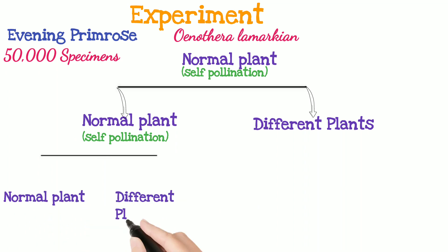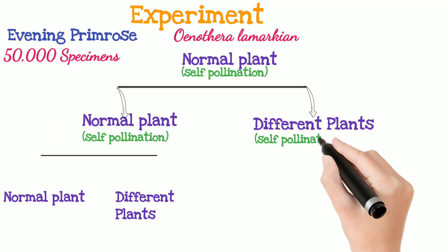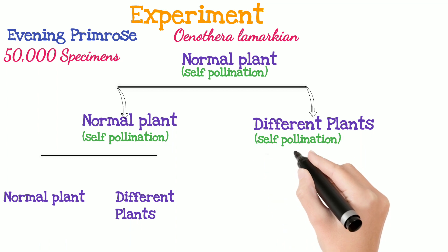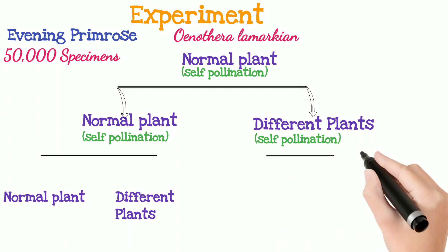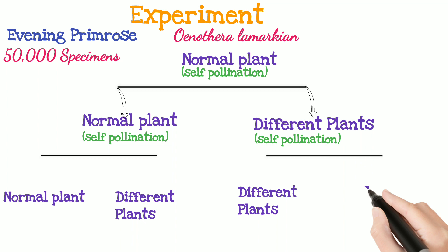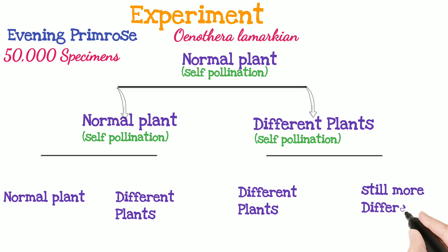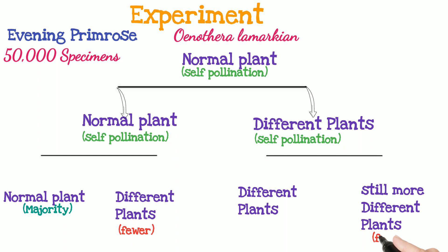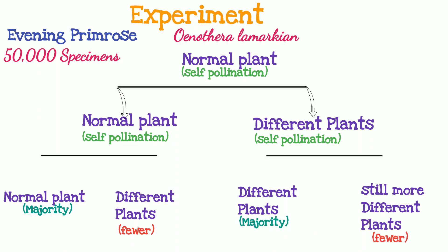After the self-pollination of normal plants, seeds are obtained. From the seeds of normal plants, normal plants and different plants are formed, with normal plants still in majority. Different plants obtained in later generations after self-pollination give different plants and other types of different plants, fewer in number.